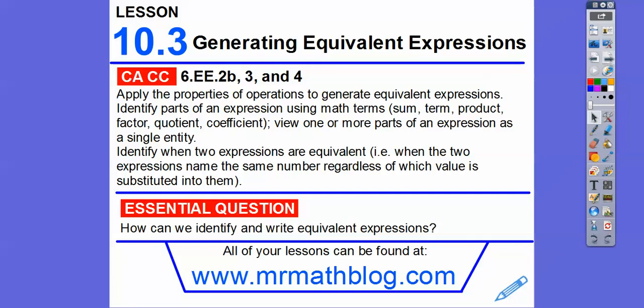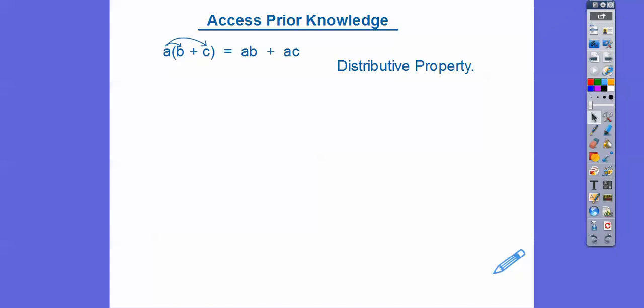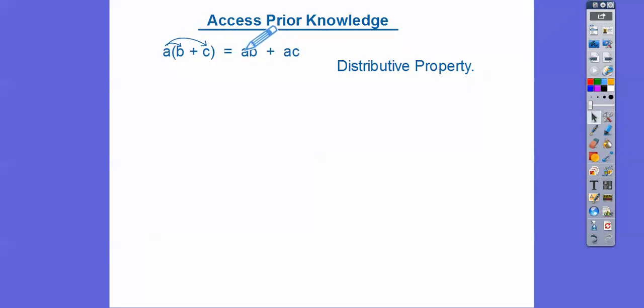So how can we identify and write equivalent expressions? Let's access some prior knowledge. Here's our good friend, the distributive property. So what we can do is distribute: when we have a times a quantity b plus c, then it's a times b plus a times c. And we can go in the backwards motion — if we see a·b + a·c, we can pull the a out. That's the distributive property both ways.